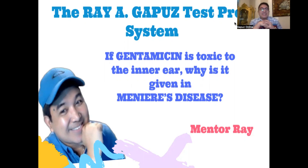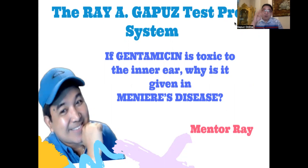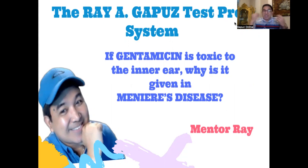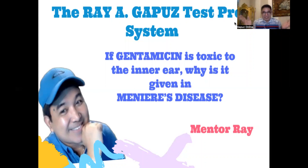The question is: if gentamicin is toxic to the inner ear, why is it given in Meniere's disease? We know that in Meniere's disease there is a potential for the patient to develop hearing loss, and if gentamicin is ototoxic — meaning it can potentially damage the vestibulocochlear nerve — then why do we give a medication that could potentially aggravate hearing loss?